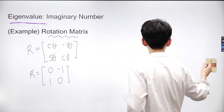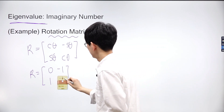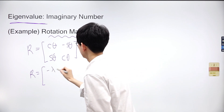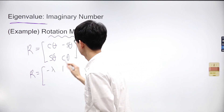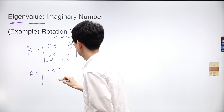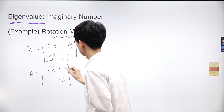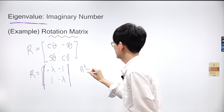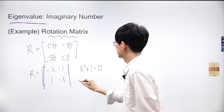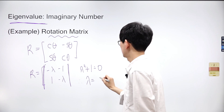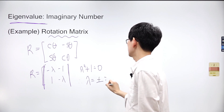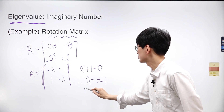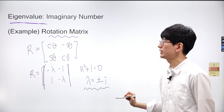Subtracting lambda I from the matrix gives R minus lambda I, with values -lambda, -1, 1, and -lambda. The determinant of this matrix is lambda squared plus 1. To make the determinant 0, lambda must be either positive i or negative i. Thus, lambda is an imaginary number.